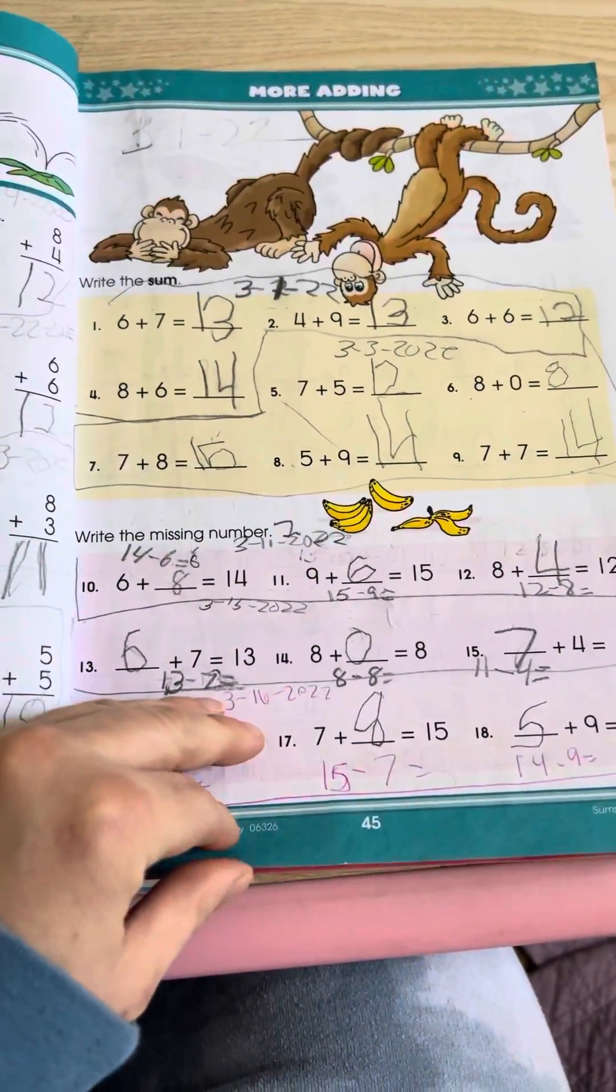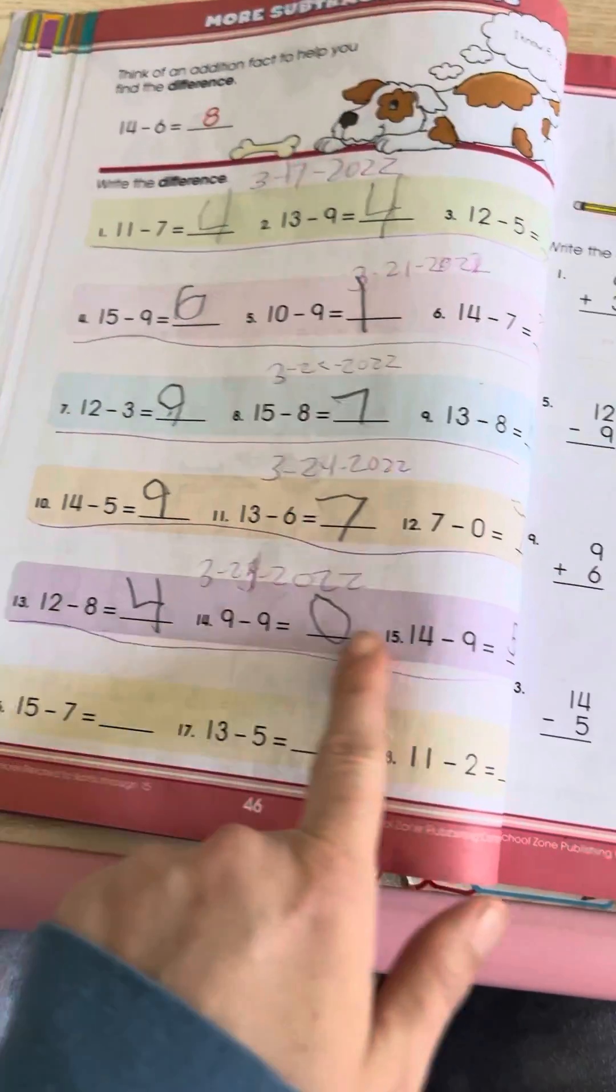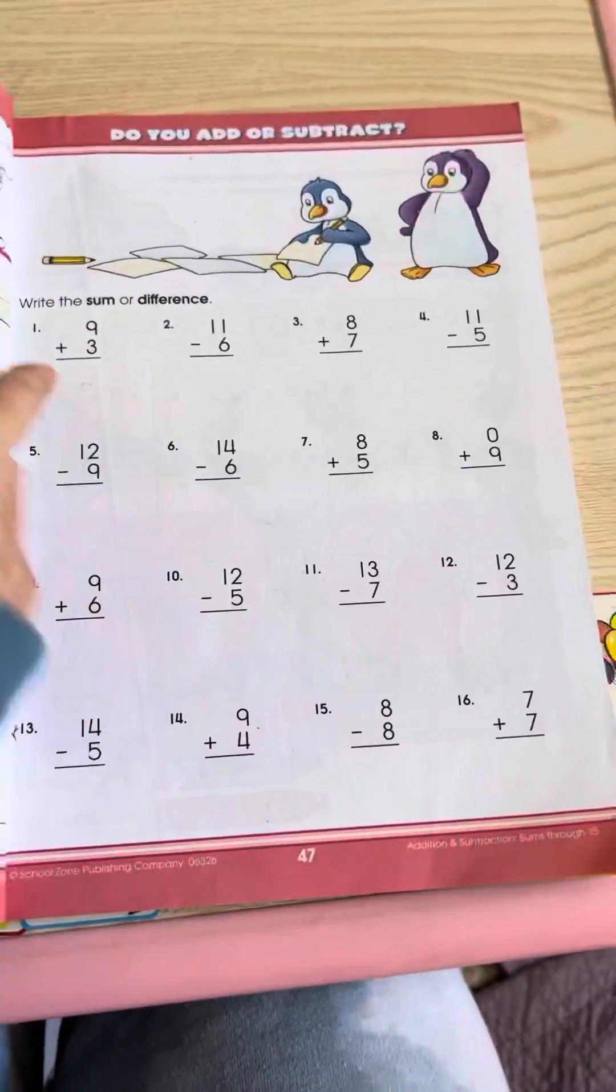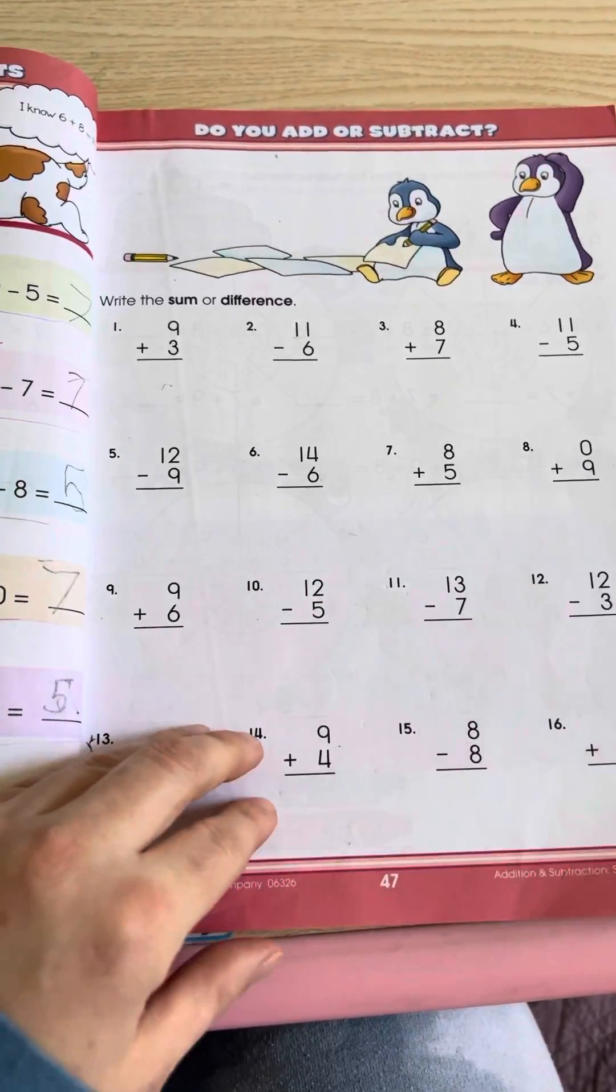We break this down way more now because he started having anxiety about doing this many problems. So basically he just does a few problems each day. I will break this down to like three to four problems a day.